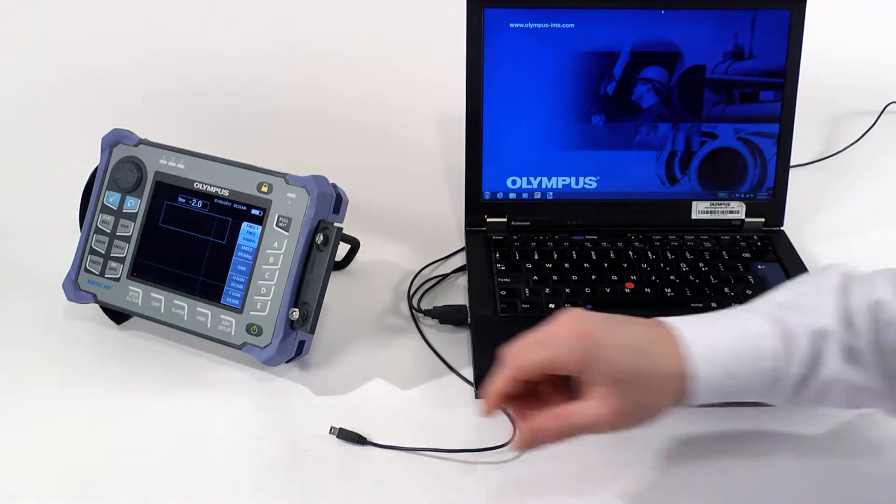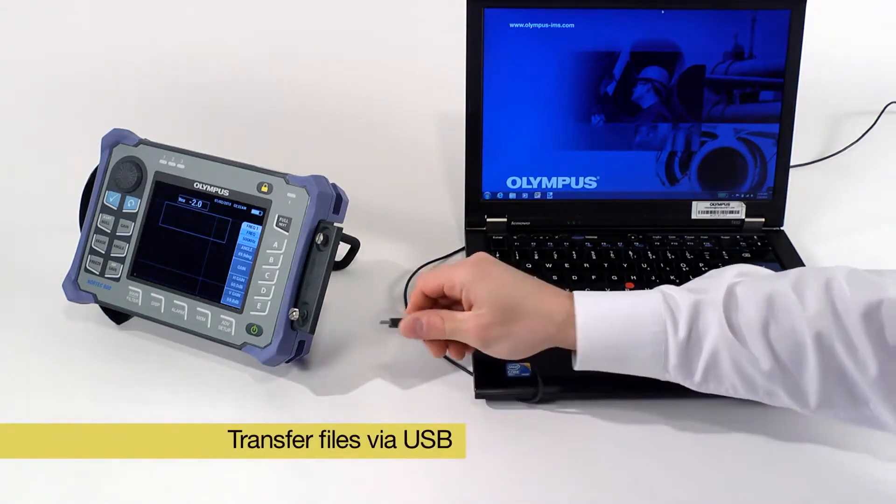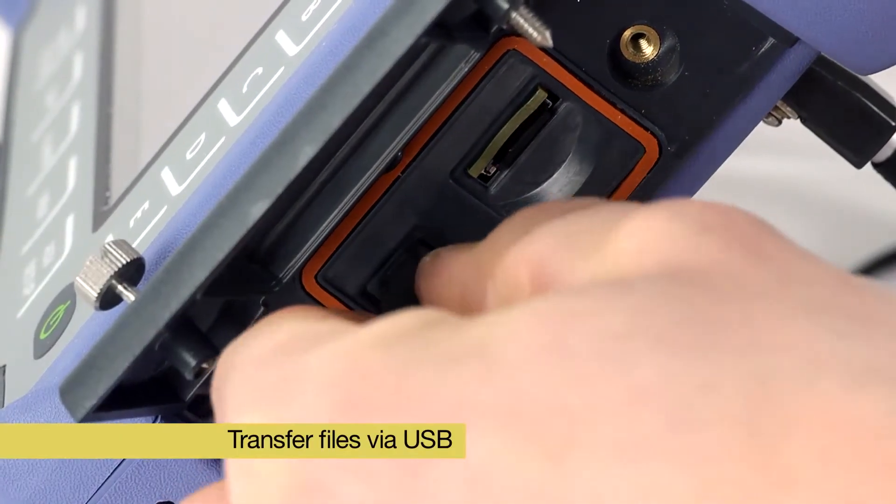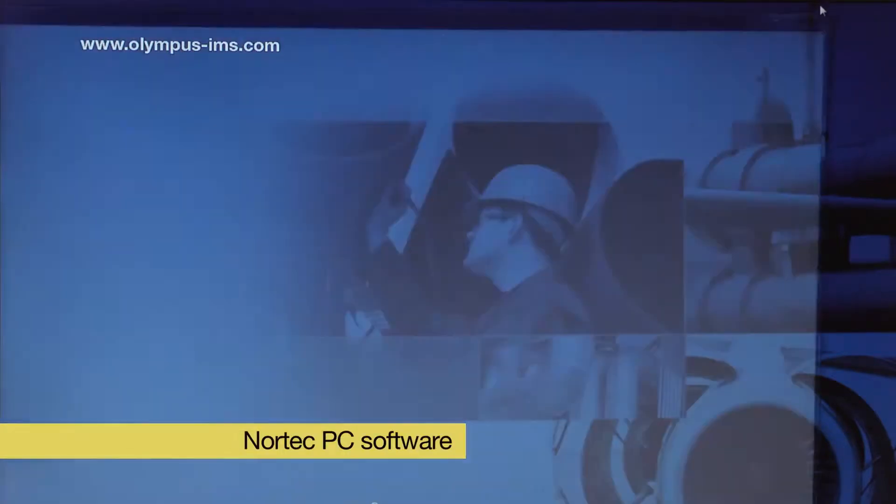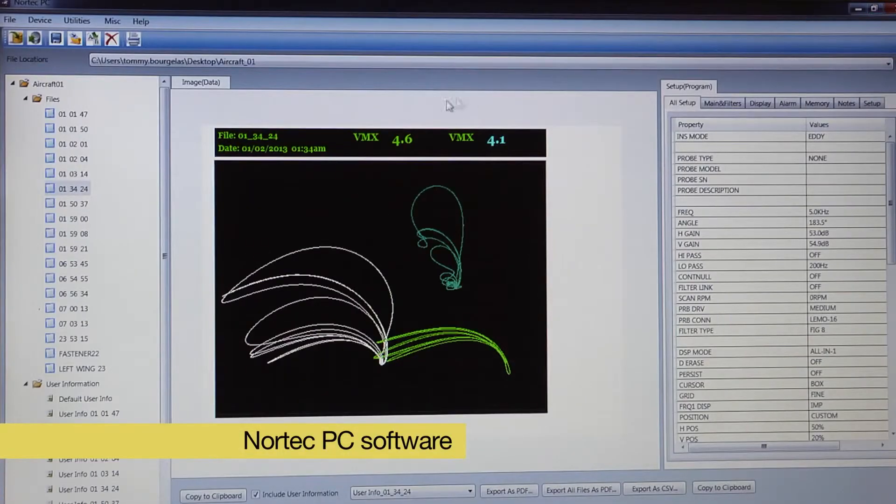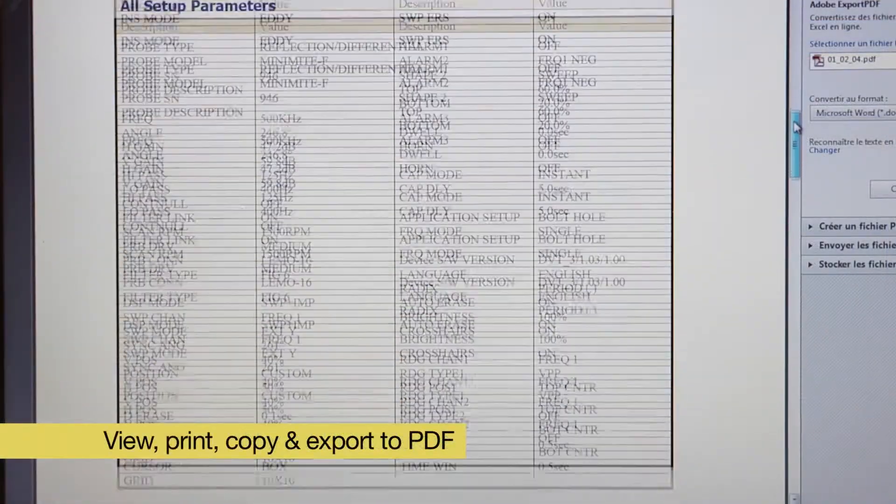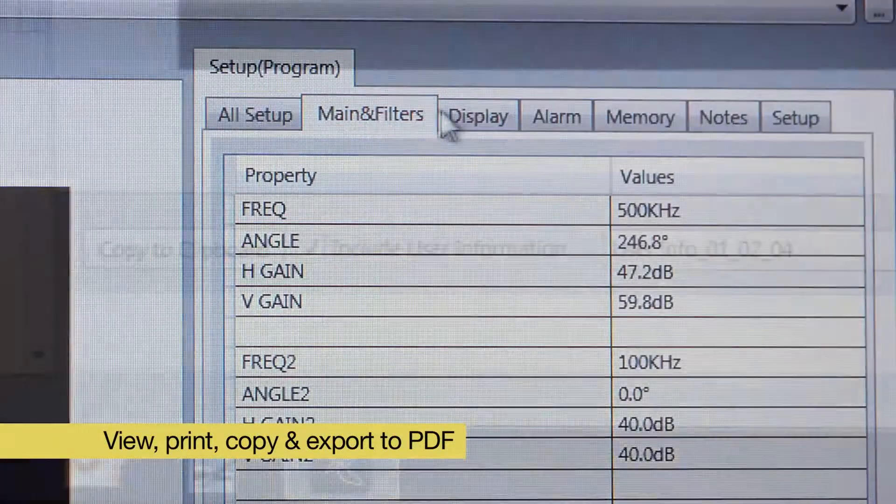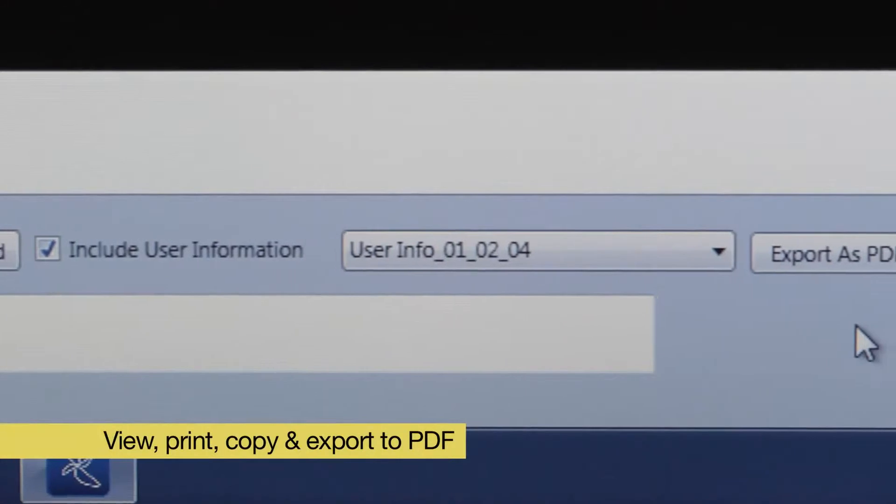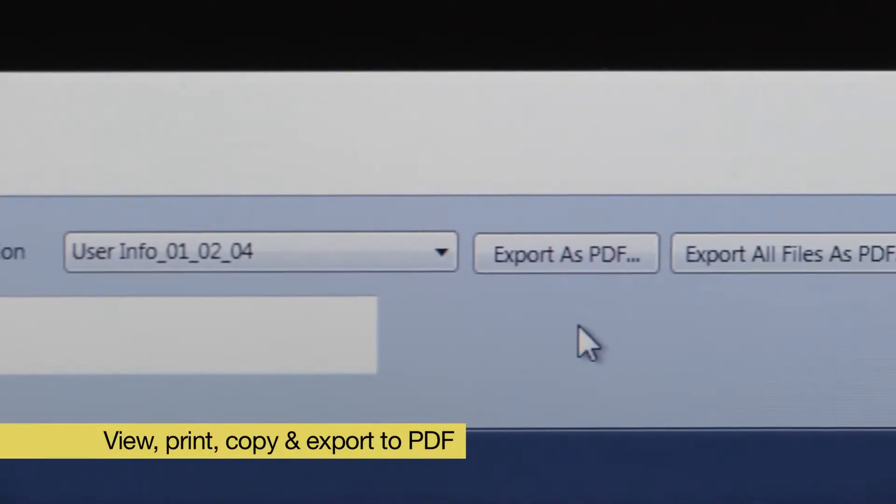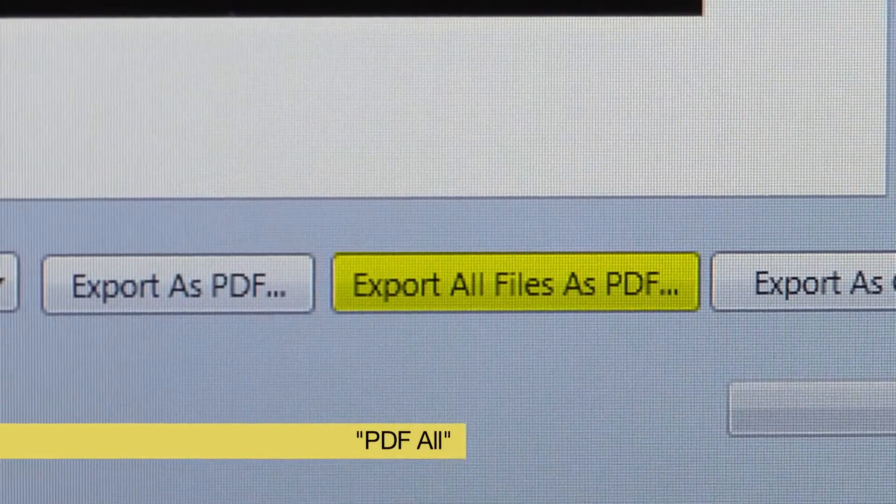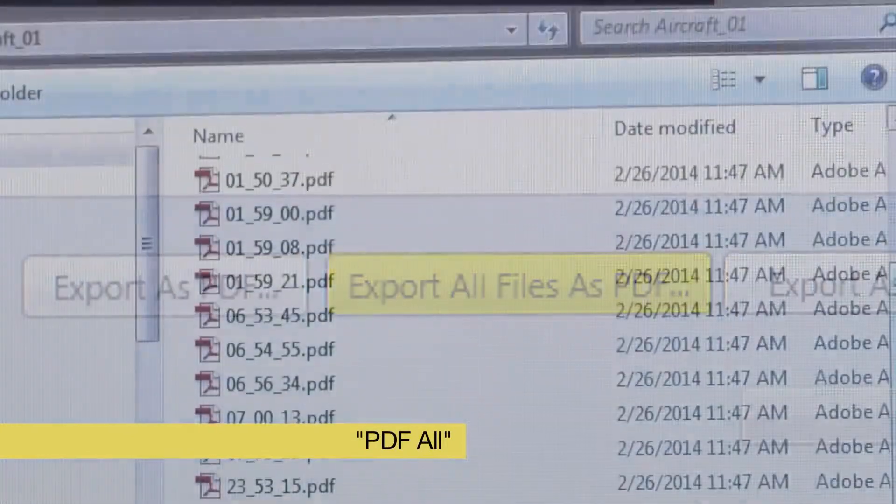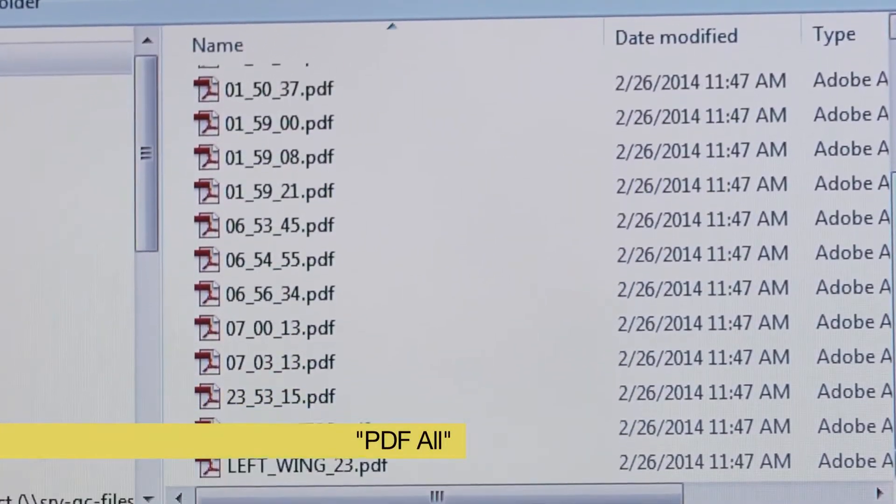Once the inspection is completed, the files can easily be transferred to a computer via the USB cable and viewed using Nortec PC software. In Nortec PC, signals or parameters can be viewed, printed, copied and easily exported into a PDF report at the touch of a button. The PDF all function comes in particularly handy to archive all inspection files in a single operation.